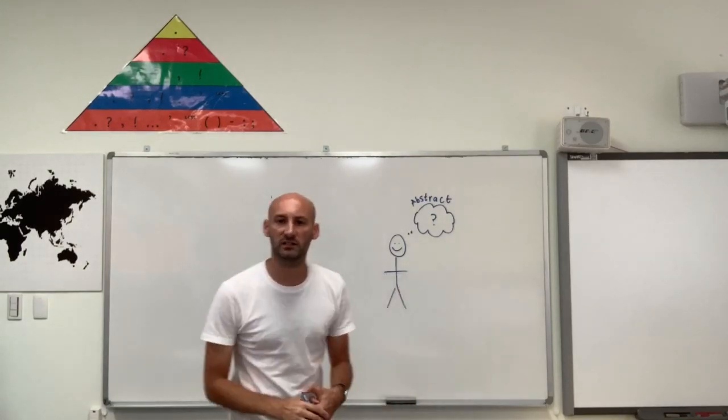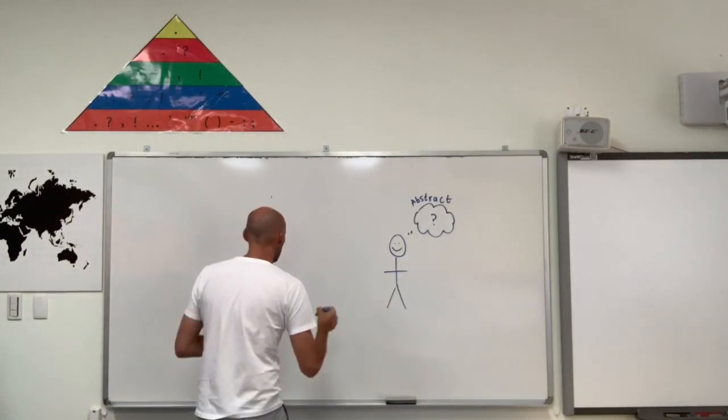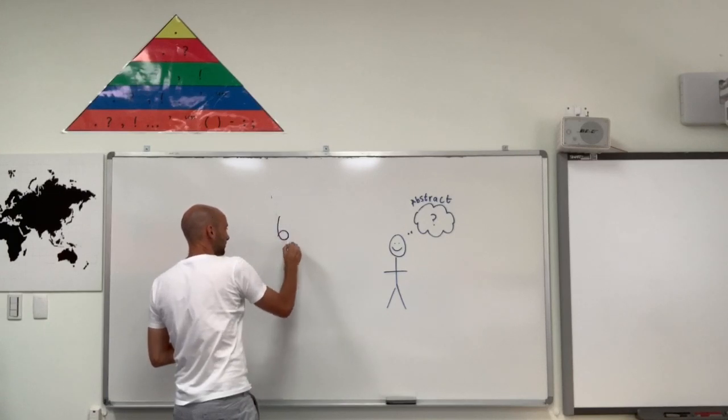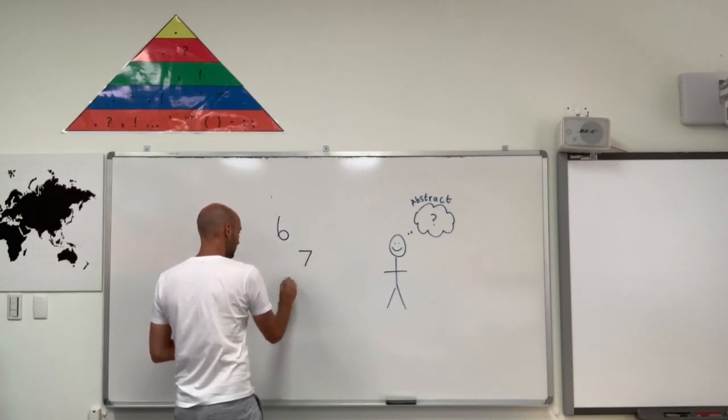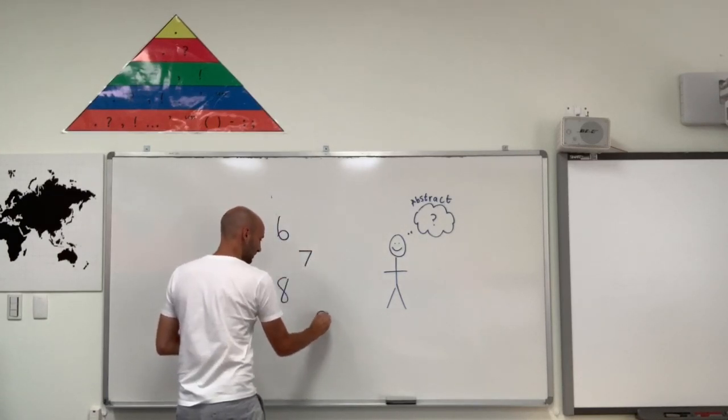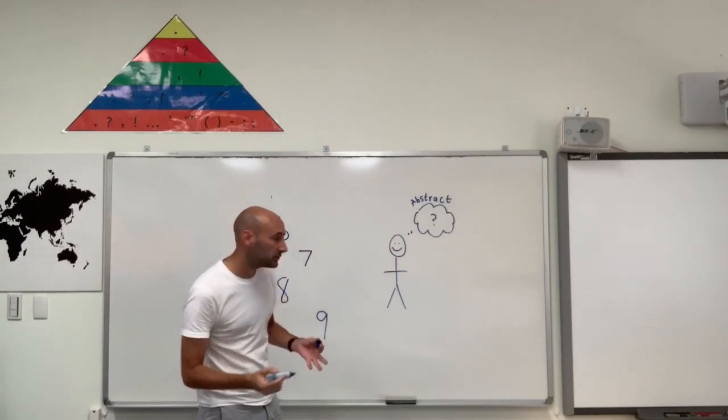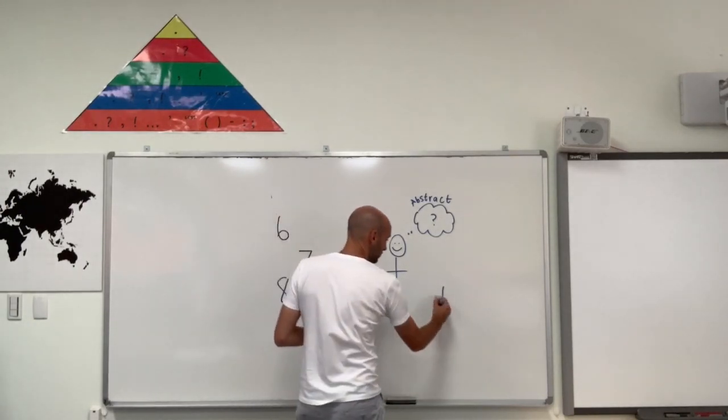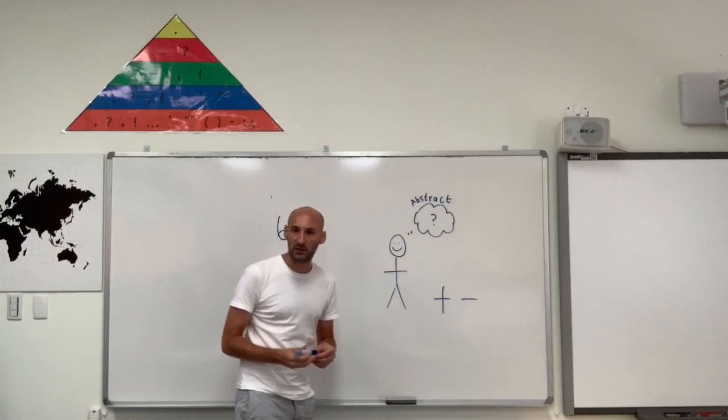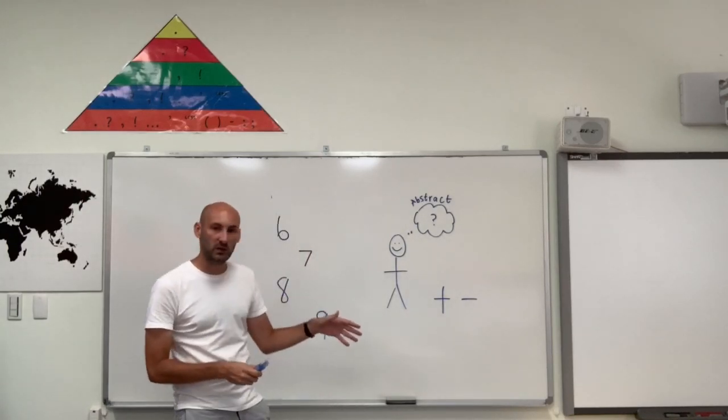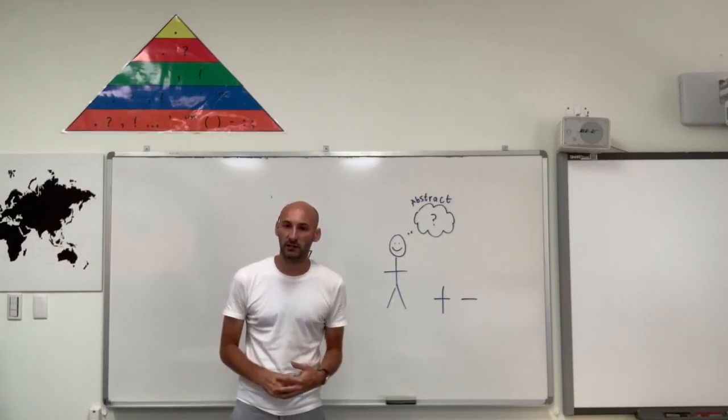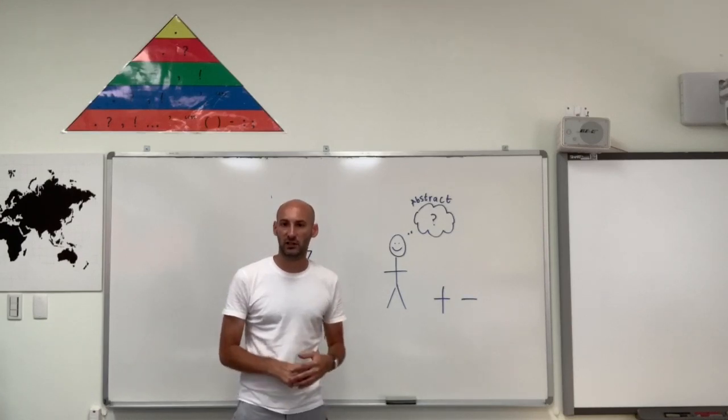Hi guys, in this video we're going to take a look at some abstract ways of adding multiples of 6, 7, 8 and 9, and we're going to do that using both addition and subtraction to help us. I'm going to show you both of those ways and you can choose the one that you like the best. Let's take a look, shall we?